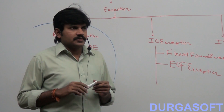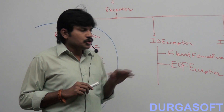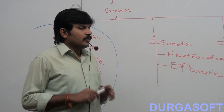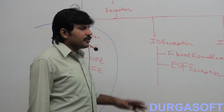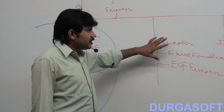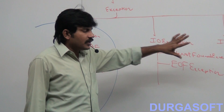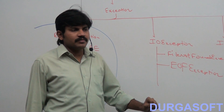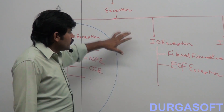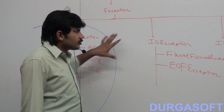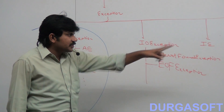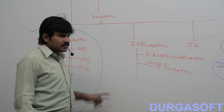What is the difference between checked and unchecked exceptions? Which are checked exceptions, which are unchecked exceptions?